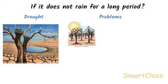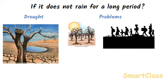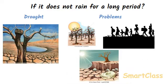In drought conditions, the soil does not have enough water to grow crops, leading to severe shortage of food for people in that region. Vegetation such as grass and other fodder does not grow well, leading to shortage of fodder for domestic animals like cows and buffaloes. Due to shortage of food and fodder, many people in drought-affected areas migrate to other places along with their domestic animals in search of food, and some people and domestic animals may even die of starvation.